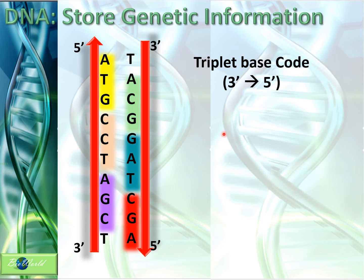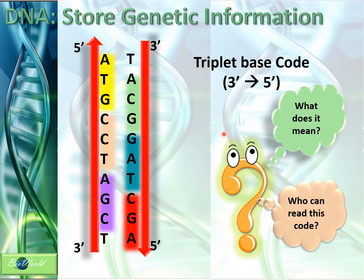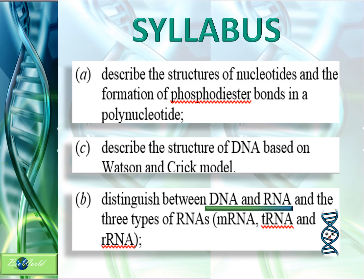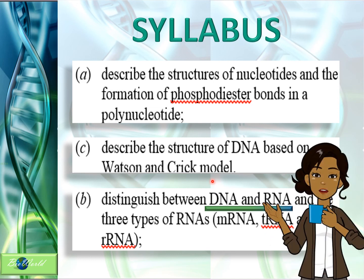So now we know what the genetic code is. But what do these triplet base codes mean, and which part of our body can read this code and make meaning of it? To answer that question, we need to understand RNA, and I will do that in my next video. Until then, bye-bye.